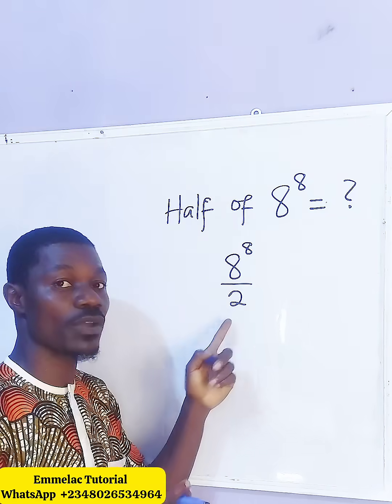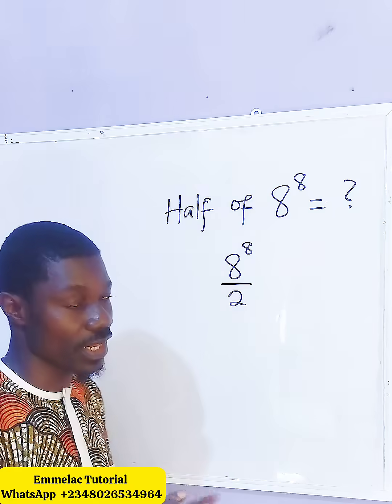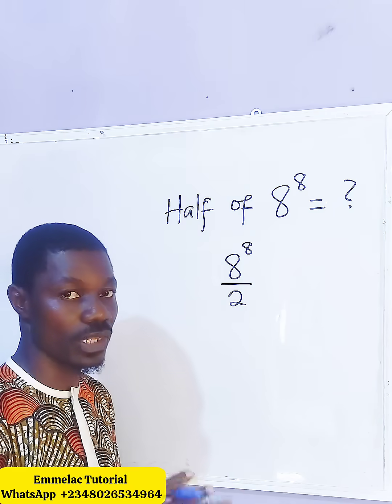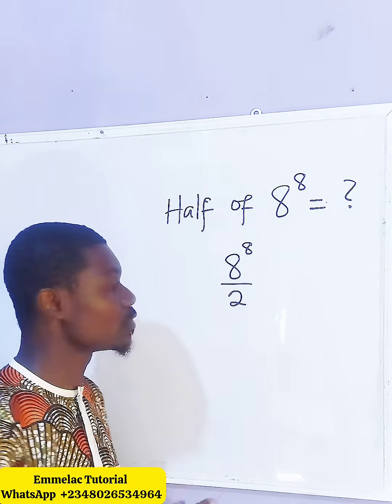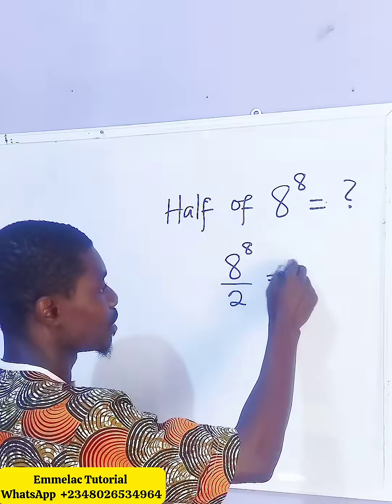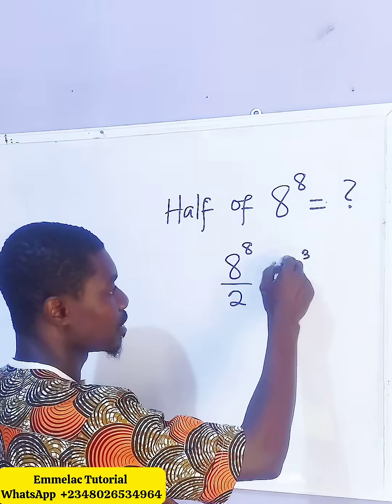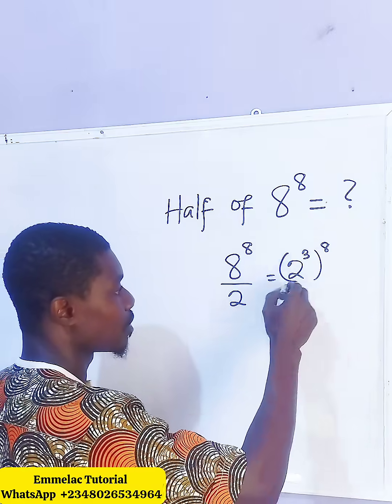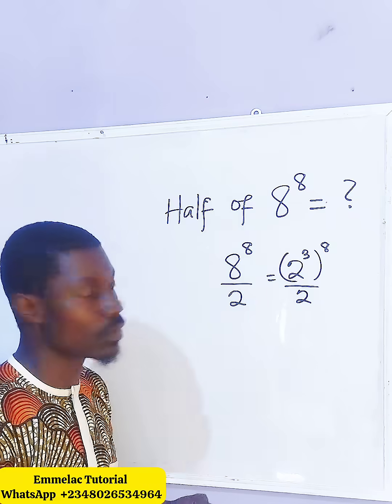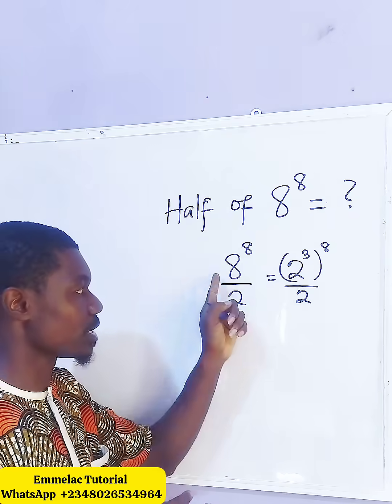Now the denominator here, we have a base of 2, but the numerator here has a base of 8. So we can actually reduce 8 to the base of 2. And that will give us 2 raised to the power of 3, take note, all raised to the power of 8, all divided by 2. Because 2 raised to the power of 3 is 8.